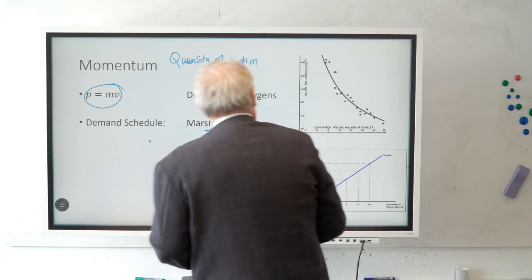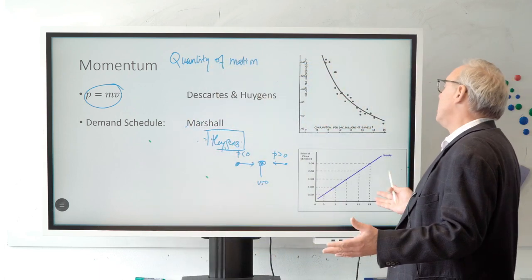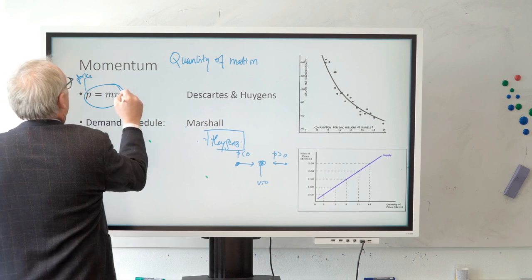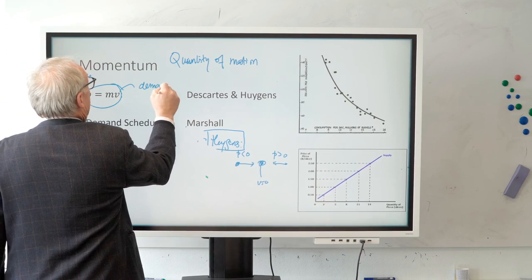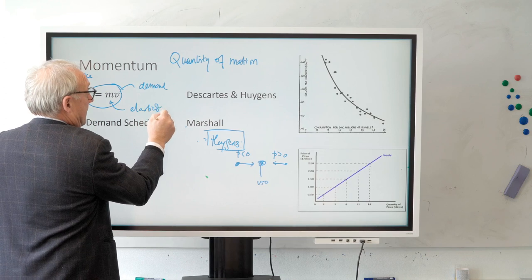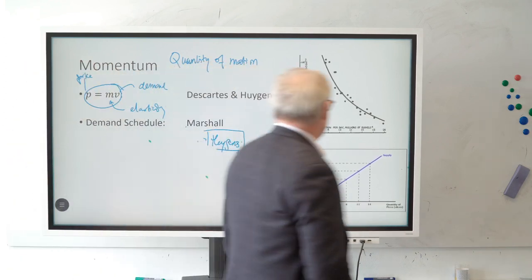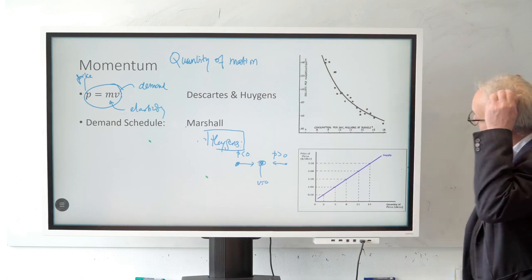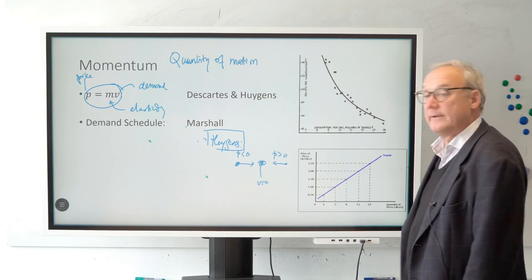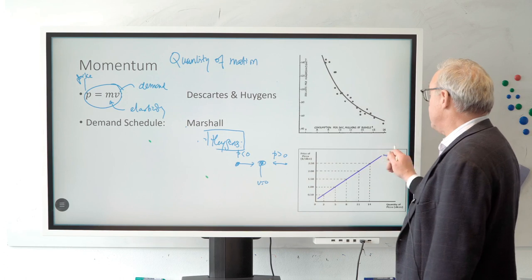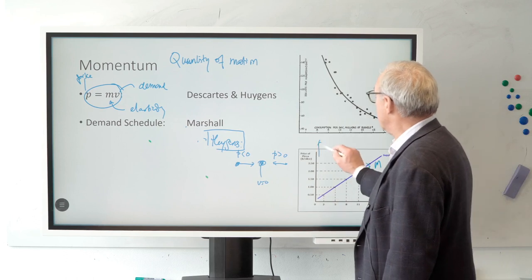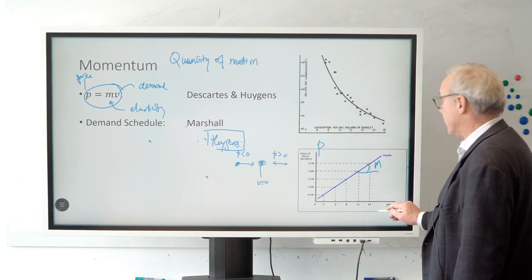From our introduction, we know now that this is the price, this is the quantity demanded — I'll call that the demand — and this is the relationship between the two: this is the price elasticity. Now I'll just look at one of these schedules — here's one. Here's the price; I just plucked this from the internet, the price of pizza in dollars per slice. This is the supply curve, so it goes nicely upward. This slope here would be M, this would be the momentum, and this thing should be the velocity — the quantity demanded.